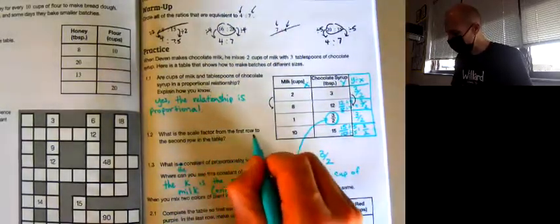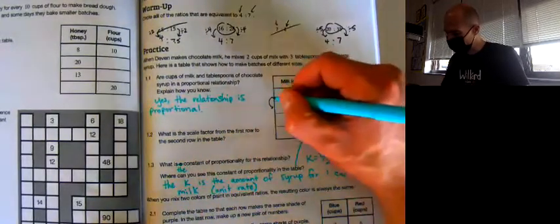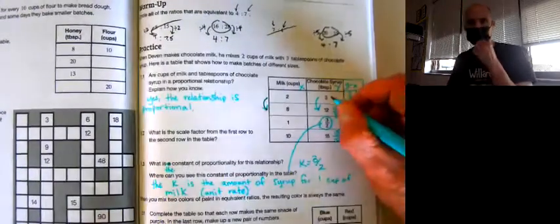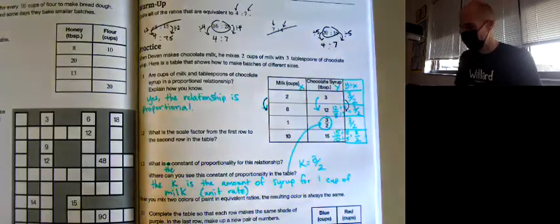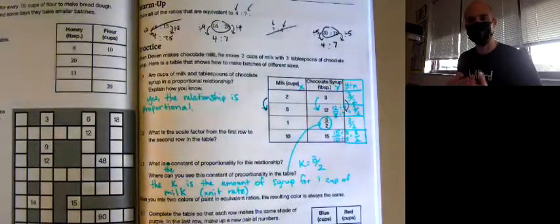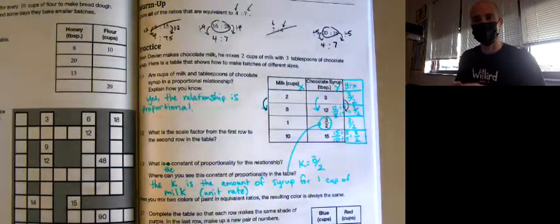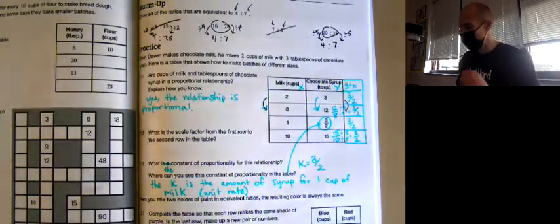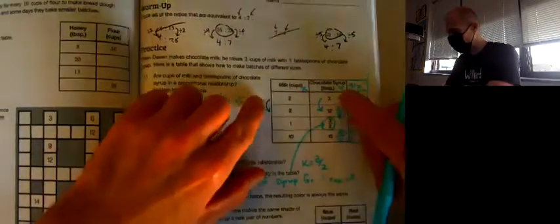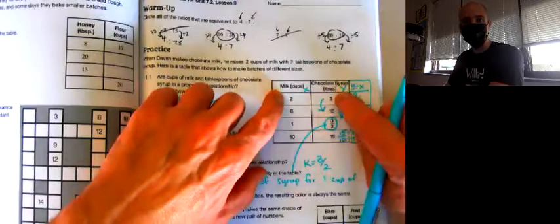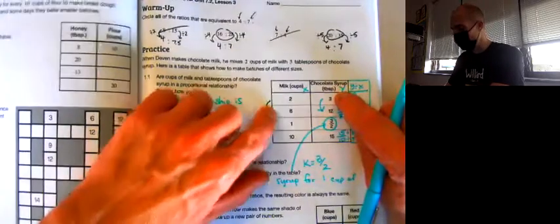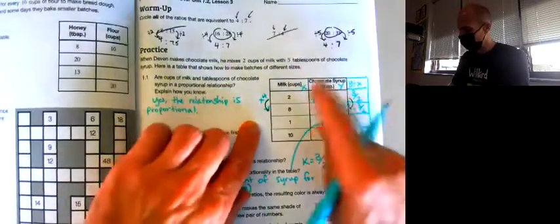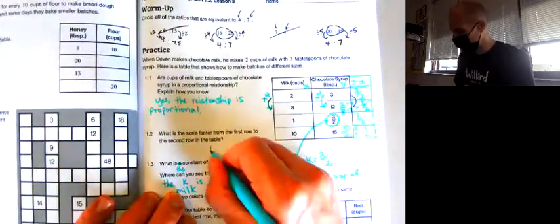What is the scale factor from the first row to the second row on the table? They're asking us what do you need to multiply the batch from the first row by in order to scale it up to make the second row. You might have heard that the unit rate, the scale factor, and the constant of proportionality are all the same thing. That's definitely true, depending on how you look at things. They're asking us to think of the scale factor in a little bit different way. They want you to think of the scale factor as this number to go from a two cup milk recipe to an eight cups of milk recipe. We're scaling that recipe up by a factor of four. We need four times as much milk, so that scale factor's going to be four.